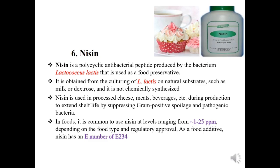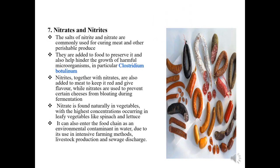Next, nitrates and nitrites. The salts of nitrate and nitrite are commonly used for curing of meat and other perishable produce. They are added to food to preserve it and to hinder the growth of harmful microorganisms, especially Clostridium botulinum, which causes botulism poisoning. Nitrites together with nitrates are also added to meat to keep it red and give flavor, while nitrates are used to prevent certain cheeses from bloating during fermentation. Nitrate is found naturally in vegetables, with the highest concentrations in leafy vegetables like spinach and lettuce. It can also enter the food chain as an environmental contaminant in water due to intensive farming methods, livestock production, and sewage discharge.